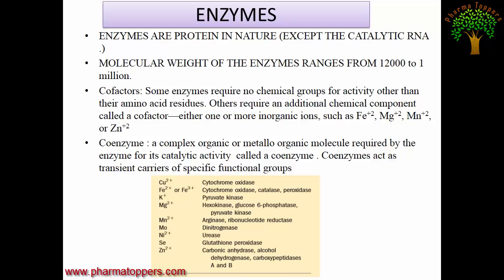For example, DNA polymerase requires a co-enzyme for its catalytic activity. Co-enzymes act as transient carriers of specific functional groups. For instance, if an enzyme requires an acetyl group for its activity, the co-enzyme helps transfer the acetyl group from another molecule to the active site of the enzyme.